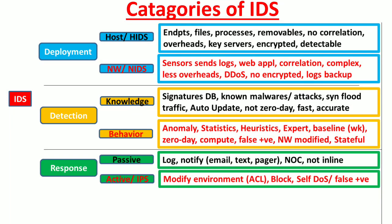Hi and welcome. Intrusion Detection Systems or IDS detects any abnormal activity which is happening on your systems or on your network in real time and also in an automated manner. An Intrusion Detection System can be a software, or it can be a hardware, or it can be a service running on a security device, for example a firewall. In this video I will discuss different categories of Intrusion Detection Systems.